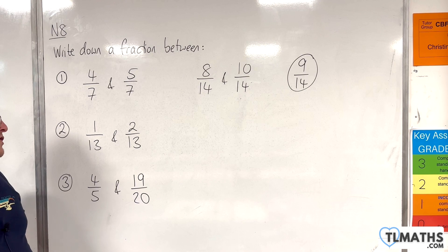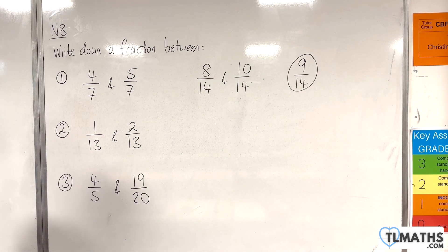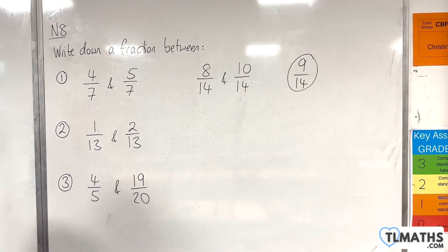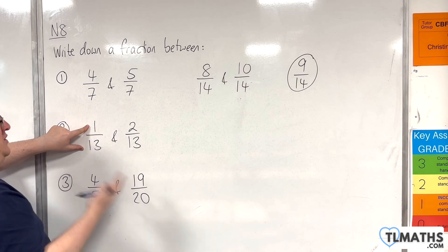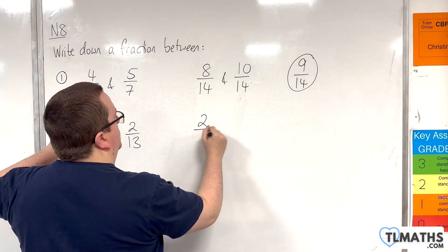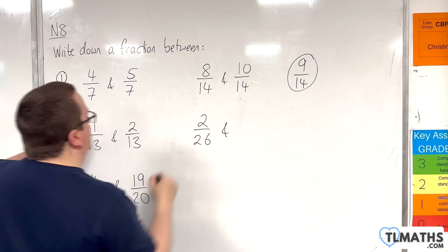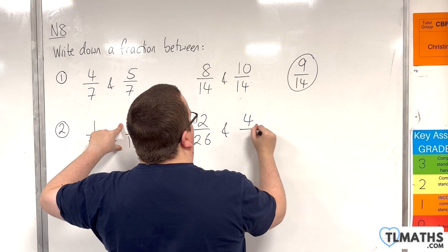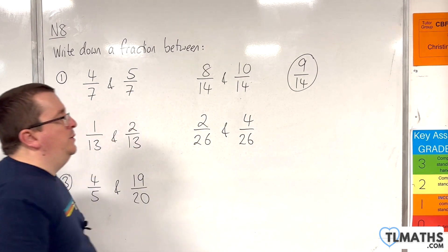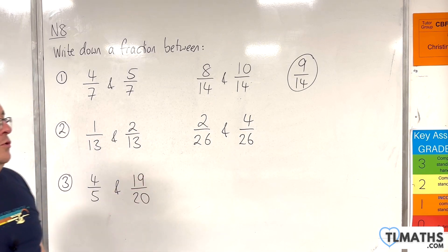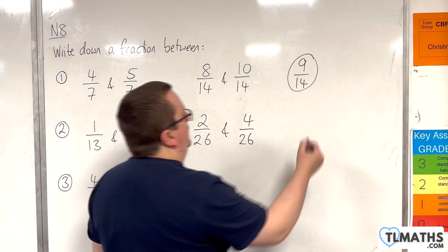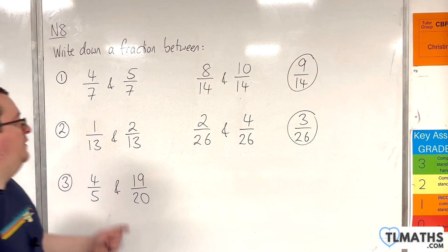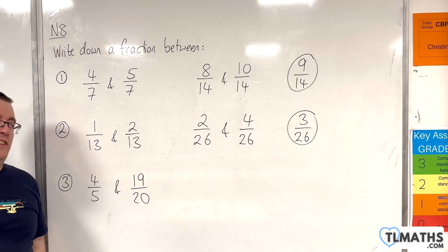Let's take a look at question number 2. We've got 1 over 13 and 2 over 13. Well, let's do the same trick. So, 1 over 13, multiplying top and bottom by 2, I'm going to get 2 over 26. And the same for 2 over 13, I'm going to get 4 over 26. So, a fraction that is between those two would be 3 over 26. So, 3 over 26 is a fraction that is between 1 over 13 and 2 over 13.